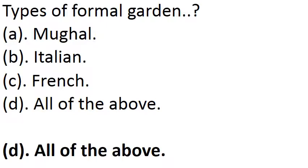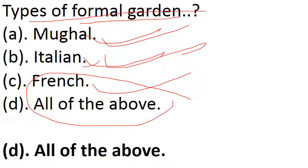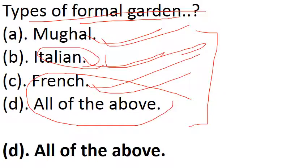This is a very easy but important question — types of formal garden. Mughal Garden, Italian Garden, French Garden — all of the above, which we discussed in previous MCQ videos. Formal gardens include Mughal Garden, Italian Garden (also called Roman Garden), and French Garden. Informal gardens include British garden and Japanese garden. If we are talking about a garden with no rules and regulations, the answer is wild garden. These are basic things you should know for ornamental horticulture.